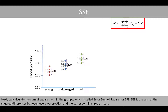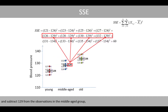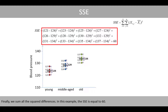SSE is the sum of the square differences between every observation and the corresponding group mean. We subtract 124, which is the mean of the four young individuals, from each observation in the young group, subtract 129 from the observations in the middle-aged group, and 134 from the observations in the old group. Finally, we sum all the square differences. In this example, the SSE is equal to 60.